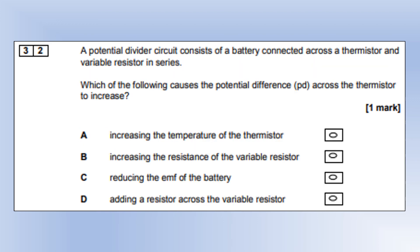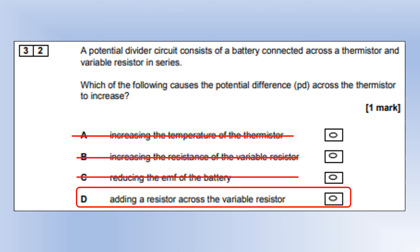A potential divider circuit consists of a battery connected across a thermistor and a variable resistor in series. Which of the following causes the potential difference across the thermistor to increase? Increasing the temperature, that would drop the resistance and therefore drop the voltmeter reading. Increasing the resistance of the variable resistor, that would increase the potential difference across the resistor and therefore decrease across the thermistor. Reducing the EMF of the battery is clearly going to make it go down. So we must be left with option D, which makes sense because that decreases the resistance of the variable resistor part of the circuit.